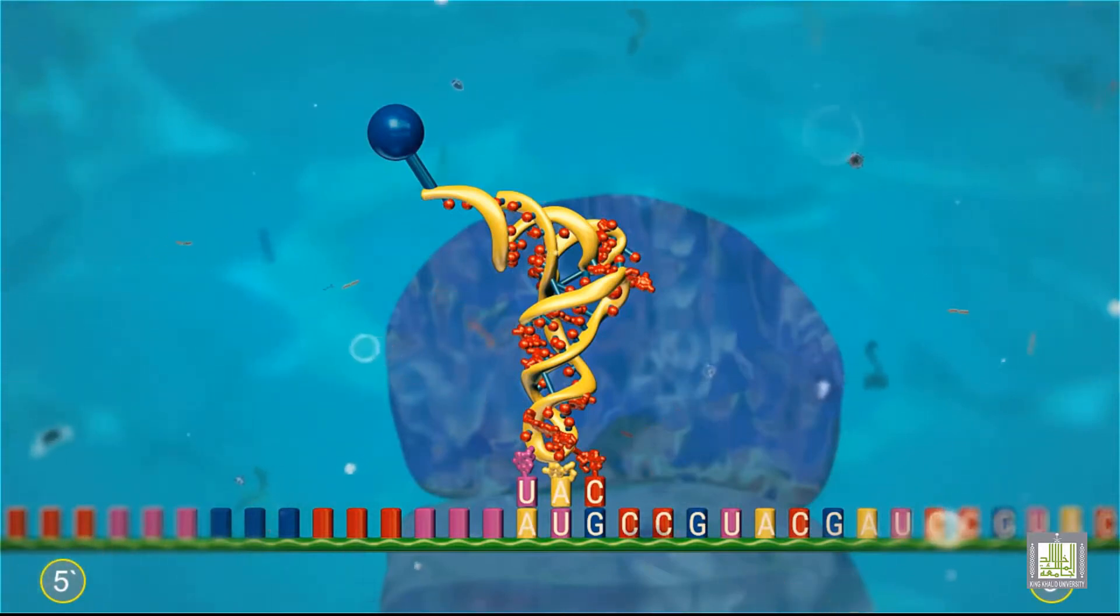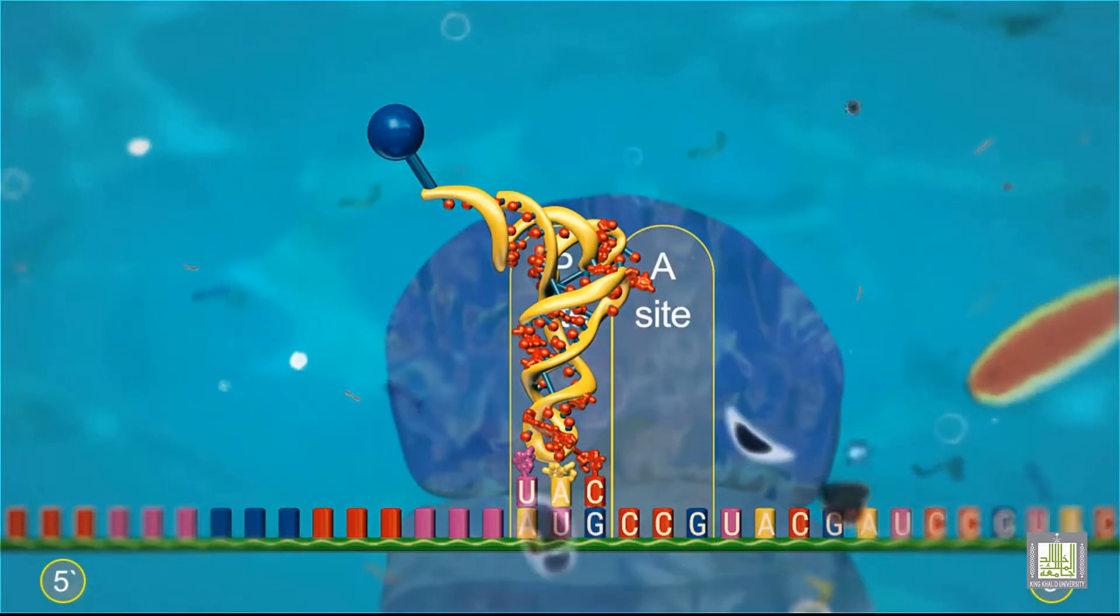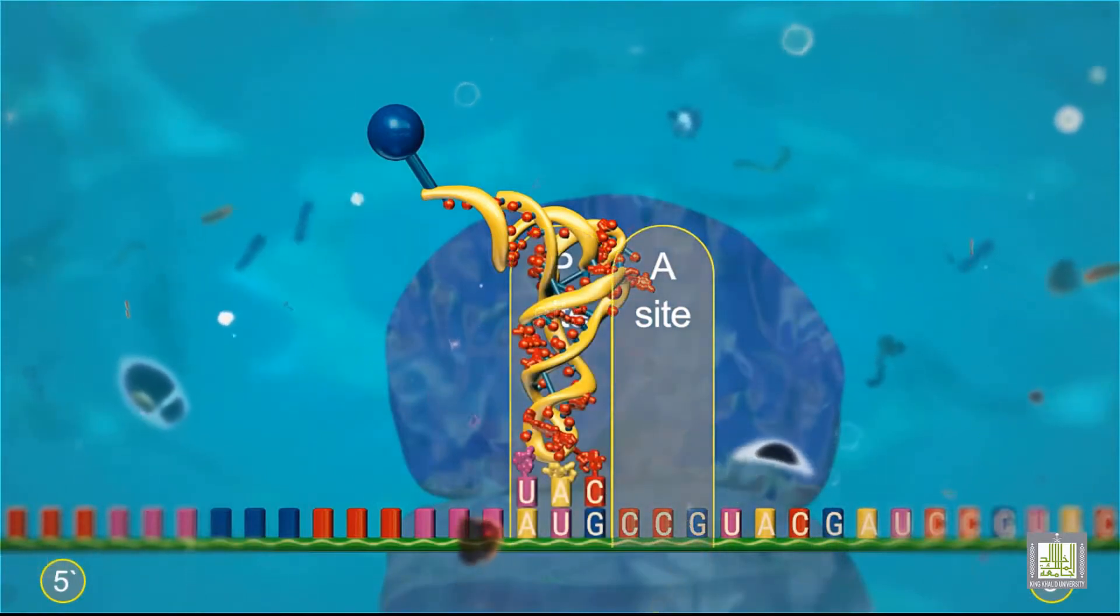The 70S ribosome has two sites to which transfer RNA-carrying amino acids can bind. One is called the peptidal, or P-site, and the other is called the acceptor, or A-site.